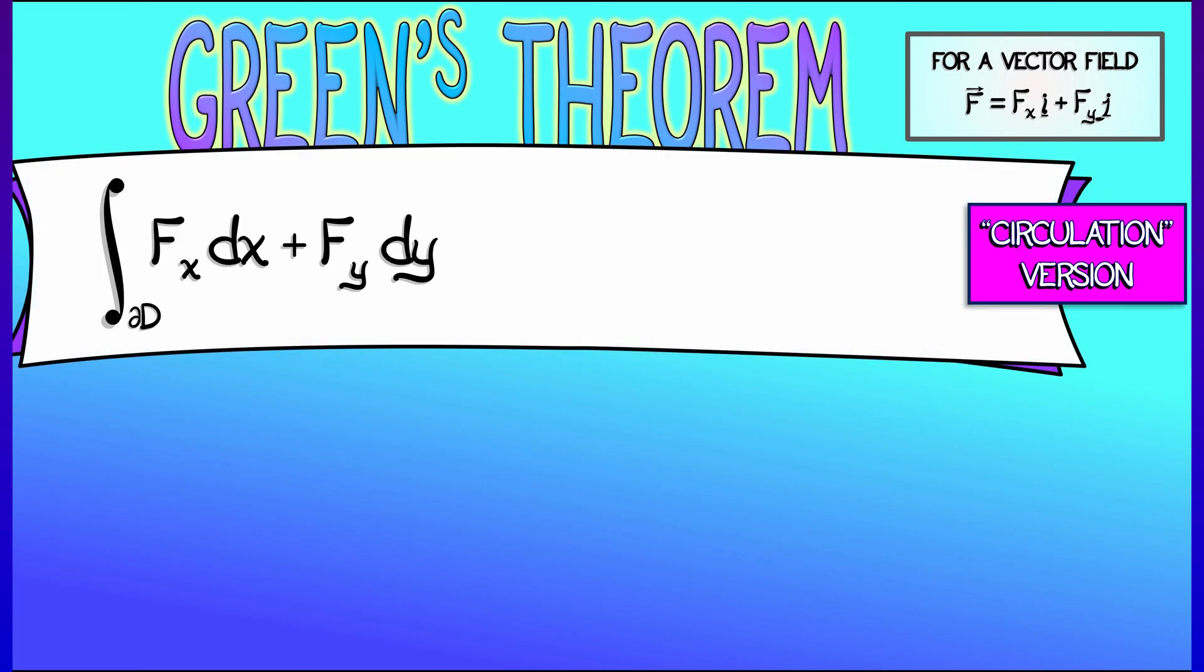The circulation version of Green's Theorem integrates the work one-form fx dx plus fy dy along the boundary of some domain d in the plane. What does Green's Theorem say? Green's Theorem says that that circulation is really the double integral over the interior of a certain density with respect to area.